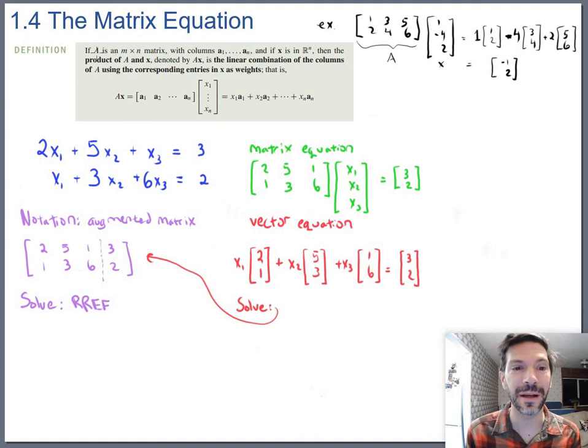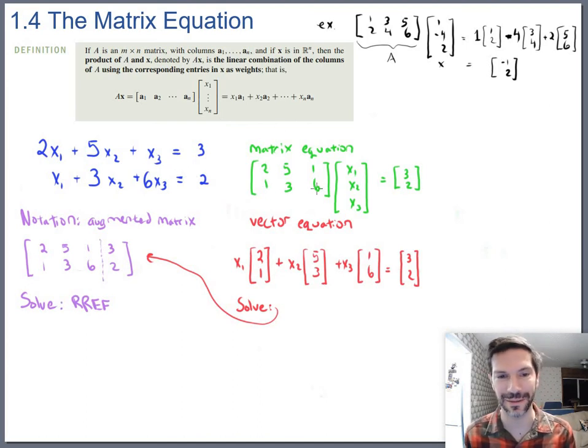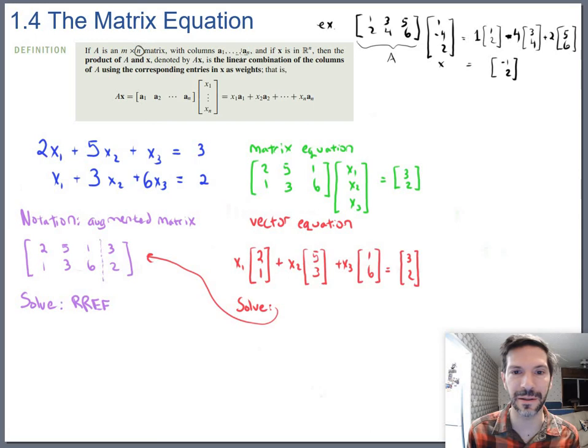Let's make sure that we just understand what they're talking about here. I think the examples should make this pretty straightforward, but let's be clear that if A is an M by N matrix—so in all these examples so far, A has been a 2 by 3 matrix. Keep in mind it's rows by columns, so 2 by 3—with columns A1 through AN, and that's the same N, by the way. So if you've got a 2 by 3, then obviously you'll have three columns, right: 1, 2, 3 columns.